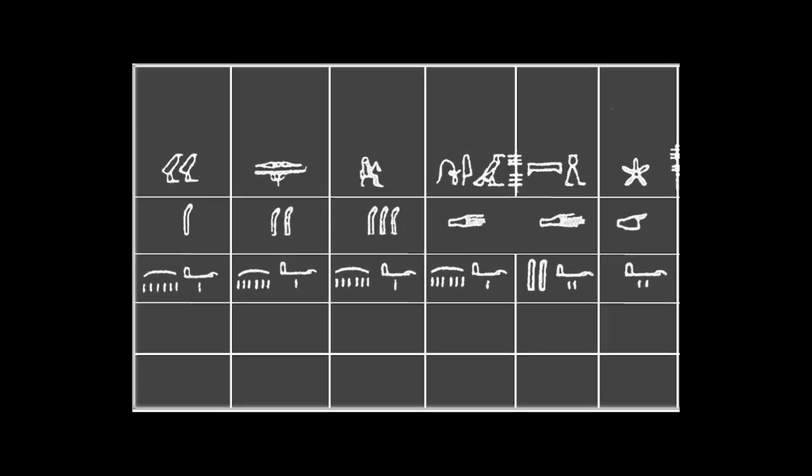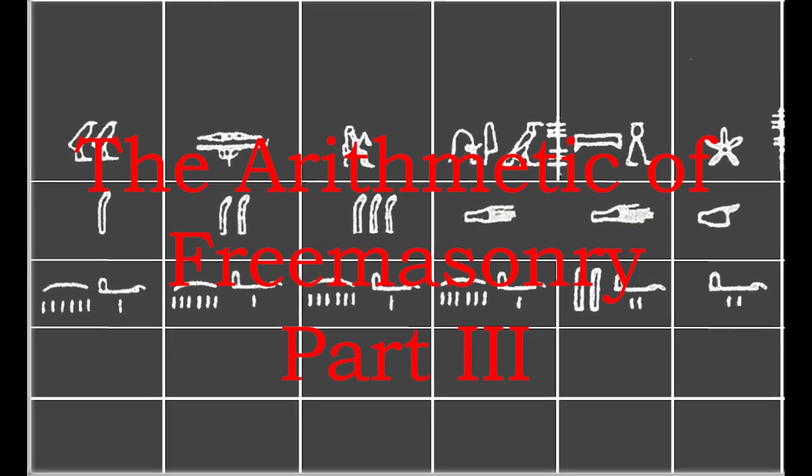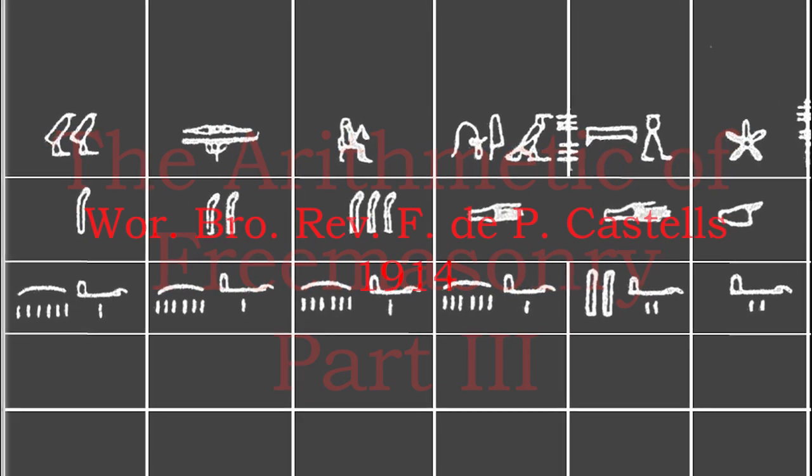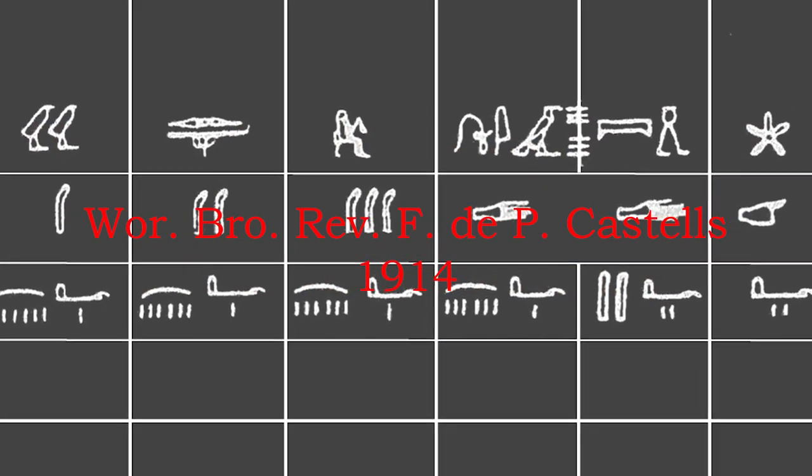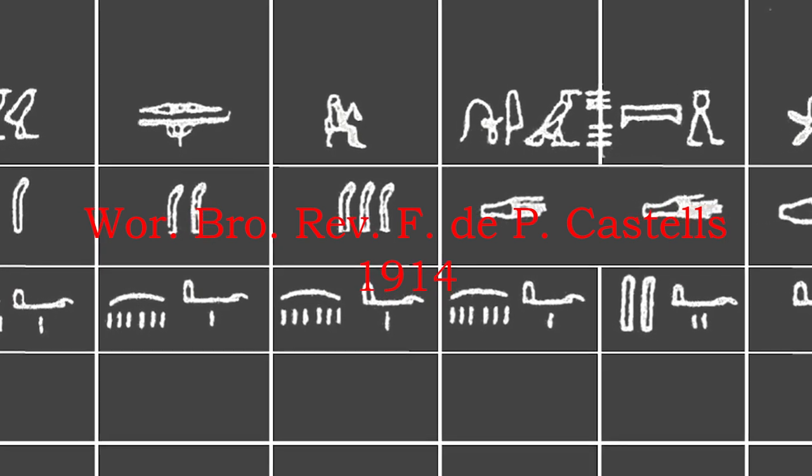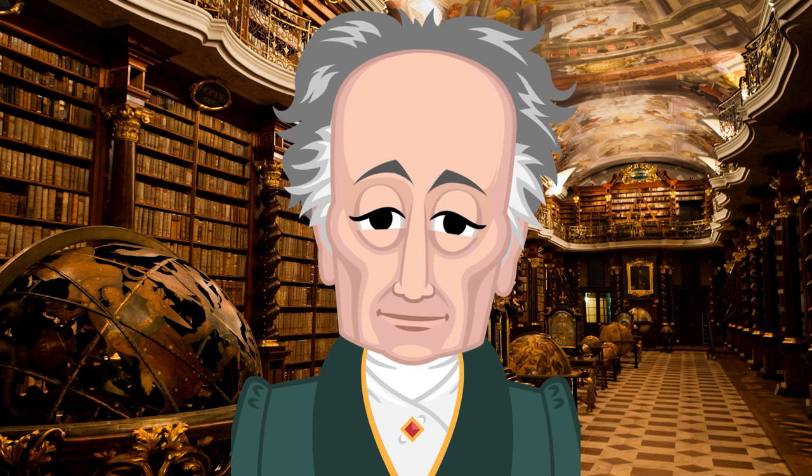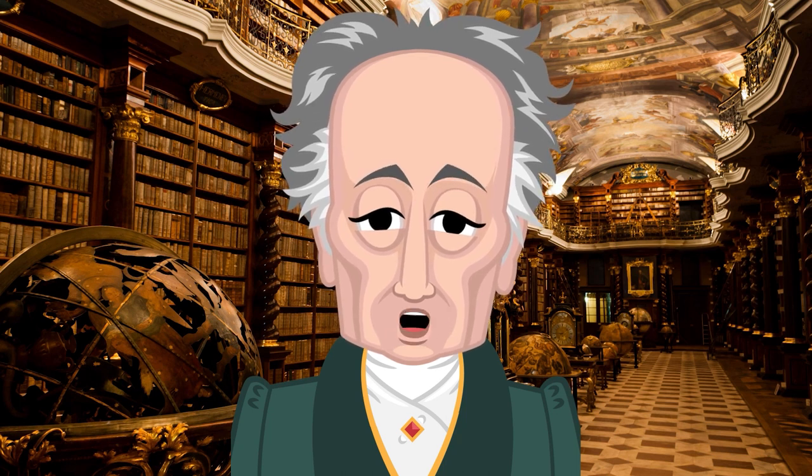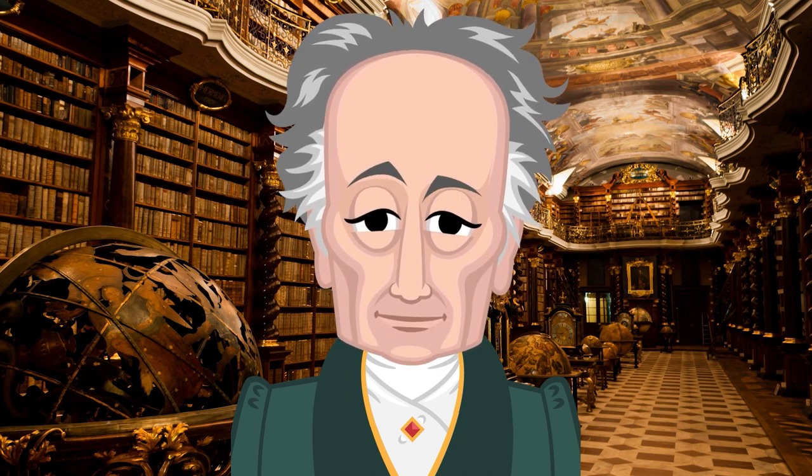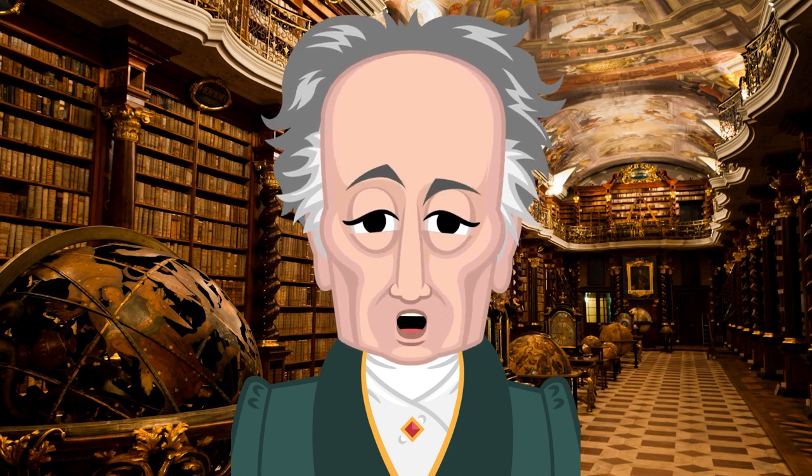Welcome to From the Quarries. Tonight is the third part of this reading of the wonderful 1914 lecture by F. de P. Castells, The Arithmetic of Freemasonry. Tonight's section refers specifically to the metrology of the craft. Good evening and welcome to tonight's presentation, From the Quarries, An Archive of Masonic Law.